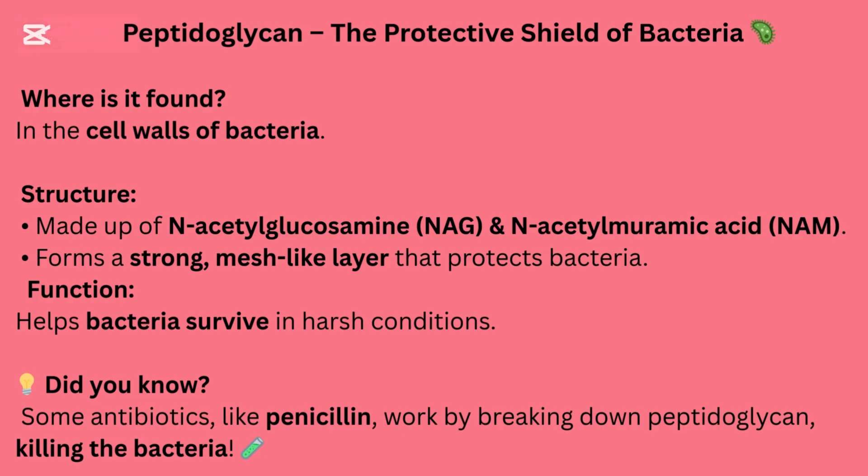Peptidoglycan — the protective shield of bacteria. It is found in the cell walls of bacteria. Structure: made up of N-acetylglucosamine (NAG) and N-acetylmuramic acid (NAM), forming a strong mesh-like layer that protects bacteria. Function: helps bacteria survive in harsh conditions. Did you know? Some antibiotics, like penicillin, work by breaking down peptidoglycan, killing the bacteria.